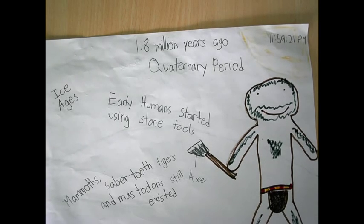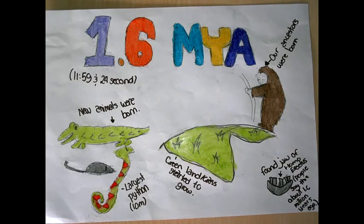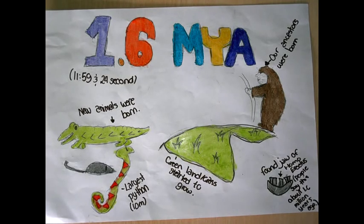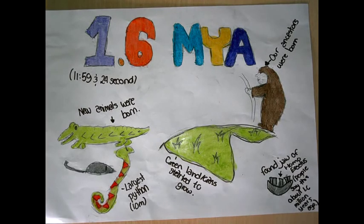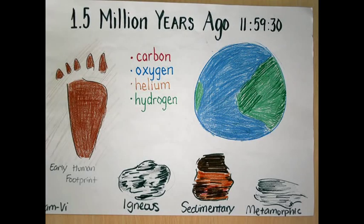Mammoths, saber-toothed tigers, mastodons, and a lot of other animals still existed during that time. 1.6 million years ago, new animals were born like egg-gill wallabies, saltwater crocodiles, and a huge python found about 10 meters large. The Greenland ice sheet was starting to grow. Our ancestors, the apes, were also starting to appear. A jaw found belonged to Homo erectus, the first human-looking ape.